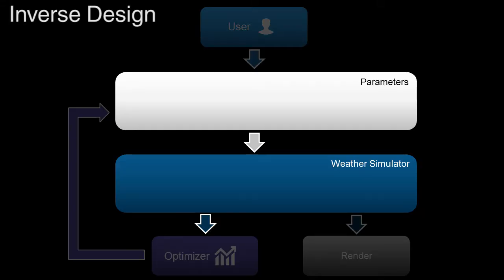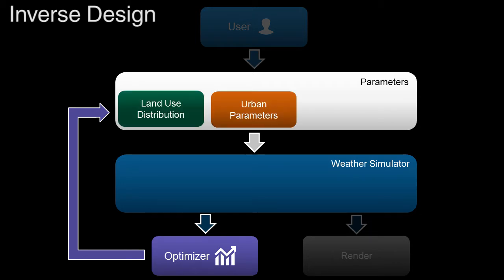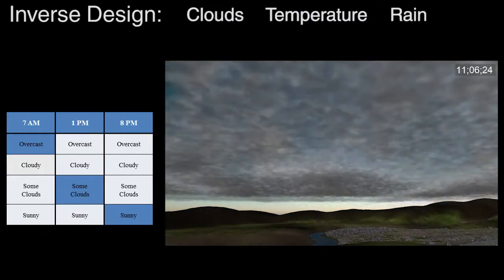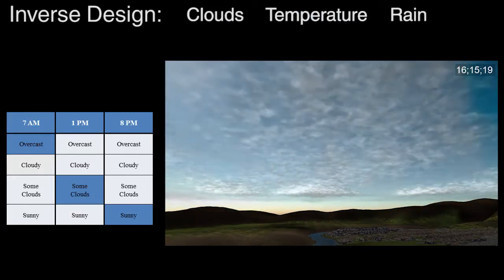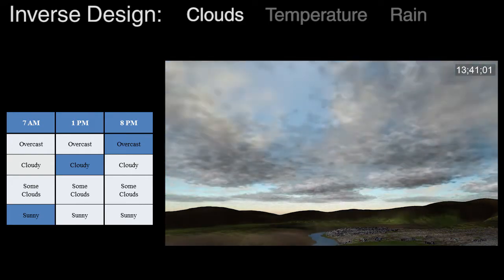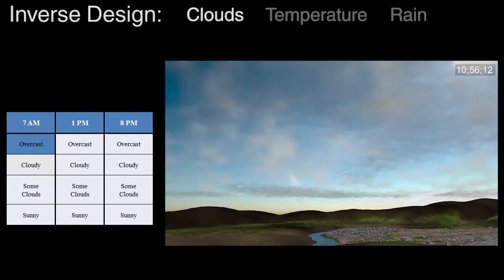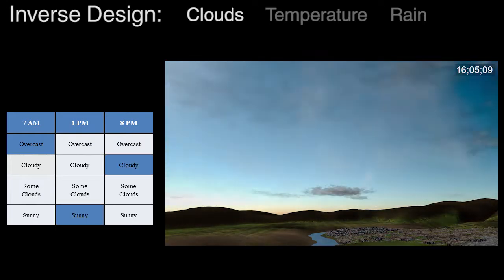In inverse design, our system, using a MCMC-based approach, discovers how to change the land use distribution, the urban parameters, or the initial weather variables to find the necessary conditions that yield the user-specified behavior. For example, we use our inverse design tool to control the cloud coverage of a user-defined city throughout one day. The user selects the high-level behavior of the weather, in this case an overcast morning, a sunny afternoon, and a cloudy evening.